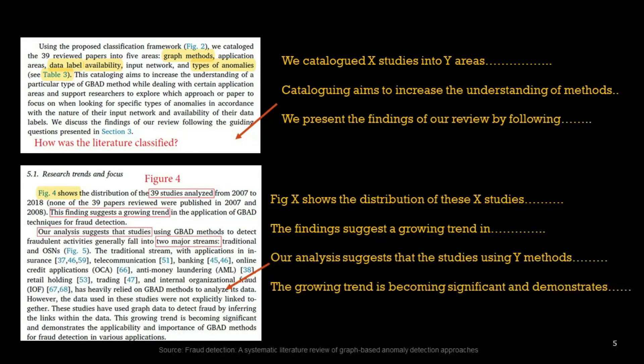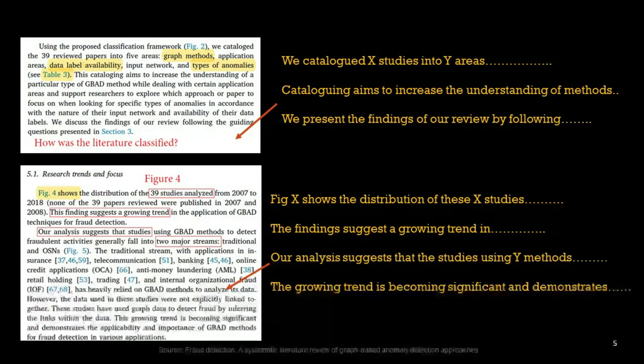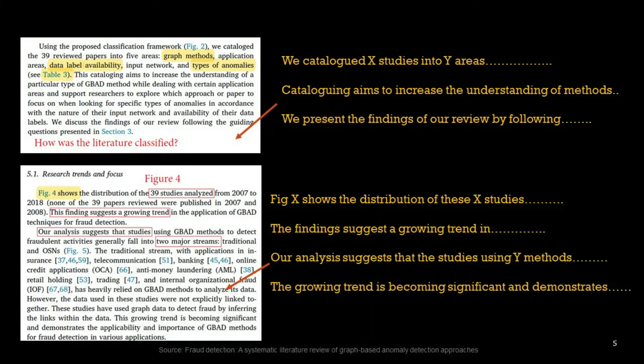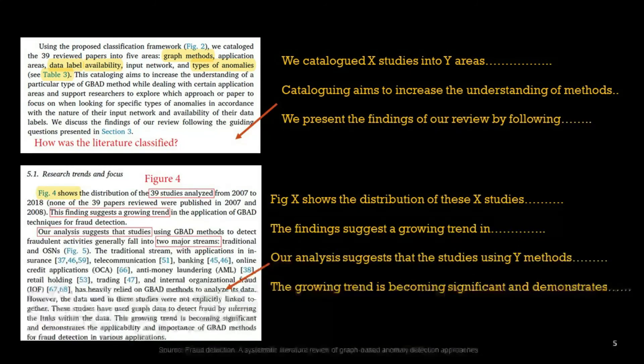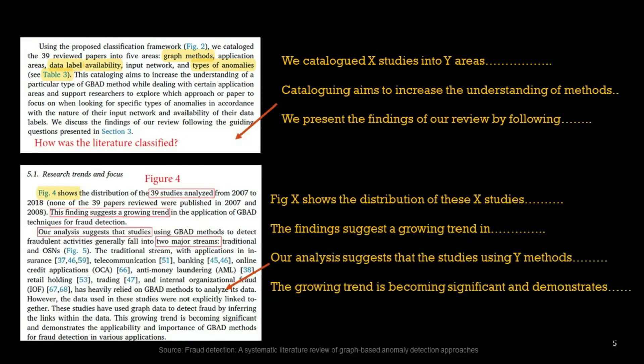So what we could say, we cataloged X studies into Y areas. The cataloging aims to understand, aims to increase the understanding of a particular type of method. So what is the purpose? You can say cataloging aims to do something in your context, whatever that could be. We discuss the findings of our review following the guiding questions presented in section 3.